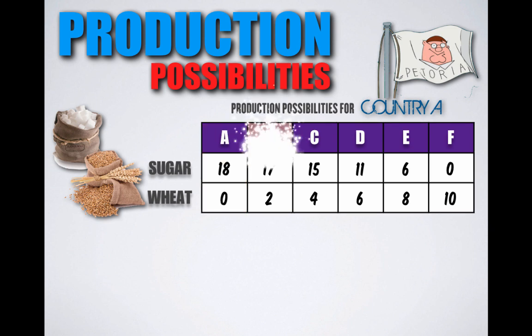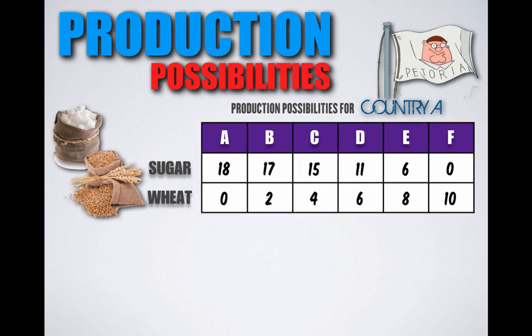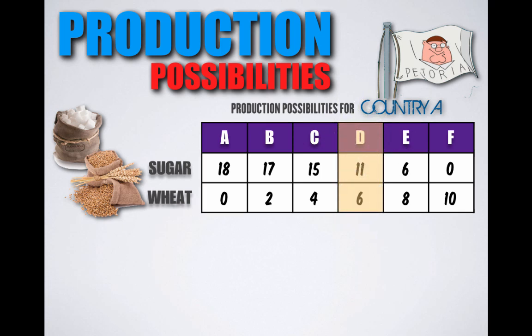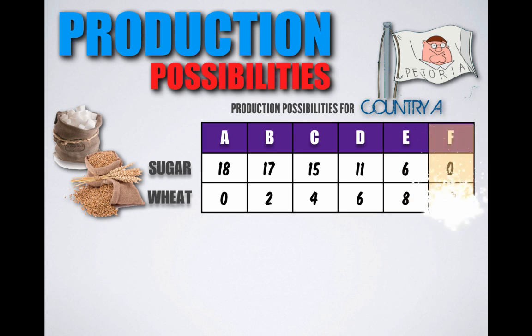At point B, they can produce 17 units of sugar and 2 units of wheat. At point C, they can produce 15 units of sugar and 4 units of wheat. At point D, they can produce 11 units of sugar and 6 units of wheat. At point E, they produce 6 units of sugar and 8 units of wheat. And at point F, they produce no units of sugar and 10 units of wheat — in this case, all resources are shifted towards the production of wheat.